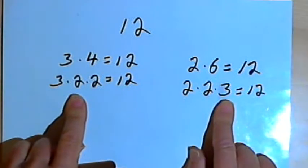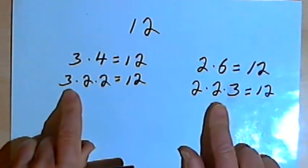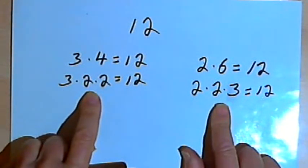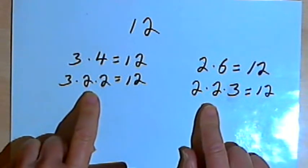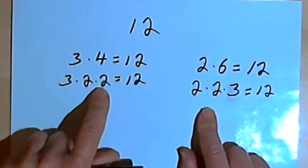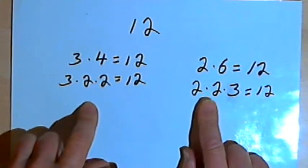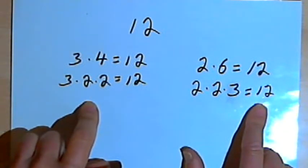Now look at these two prime factorizations. The numbers are written in different order. But I've really got just exactly the same factors in both of them. I've got 3 times 2 times 2 equals 12, and 2 times 2 times 3 equals 12.